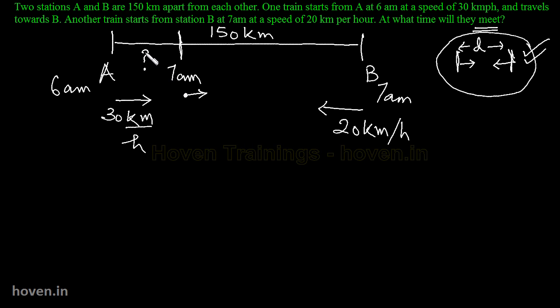Okay coming to this point now. Now 6 am to 7 am is 1 hour. 1 hour mein yeh distance kitna cover hooga. Yeh 30 km per hour hai. Toh in 1 hour it will cover 30 km here. Toh ab joh waapis bachata hai distance. Mereh paas yeh distance bachata hai. 150 minus 30. 120 km.